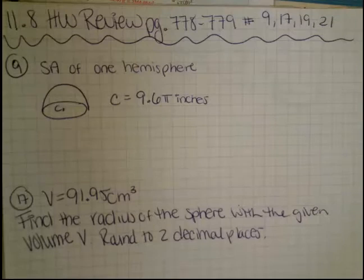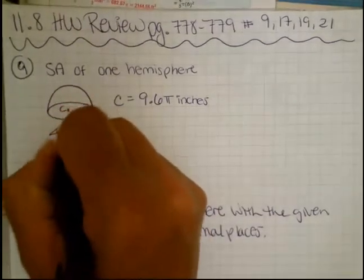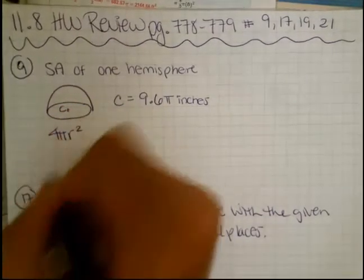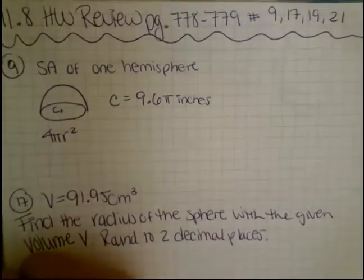Number 9, the surface area of one hemisphere. A hemisphere is half of a sphere. The surface area of the sphere is 4 pi r squared. The area of four circles is the surface area of a sphere.